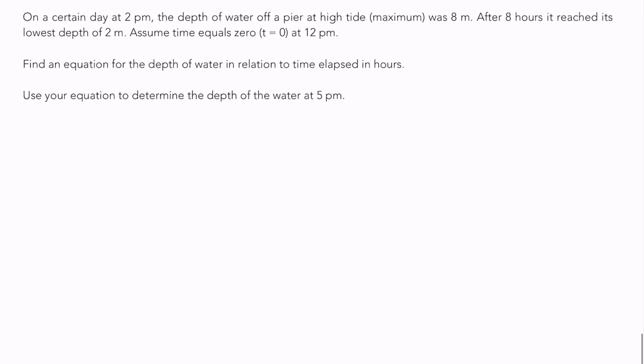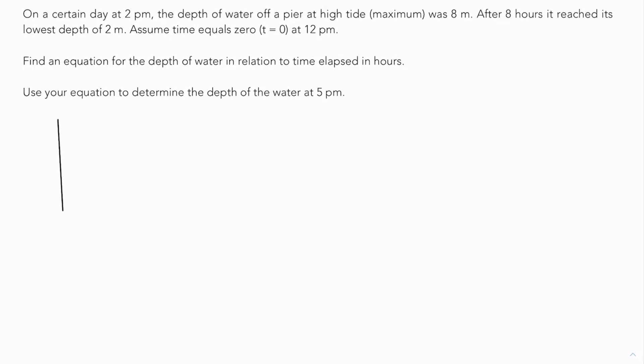If we recall, our graph looked something like this. It started at zero, came up, came down, then up and down. This high tide at 2 p.m. was 8 meters. Eight hours later at 10 it was at the low tide, and that was 2 meters. Then eight hours again after that, which is 18 hours, it was again at 8. The middle is going to go through here, which is 5.